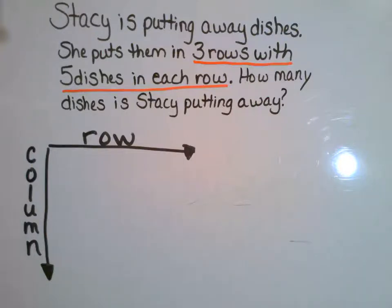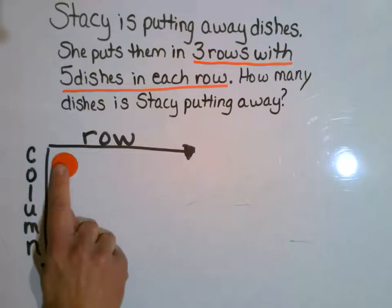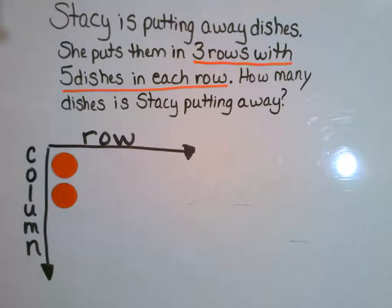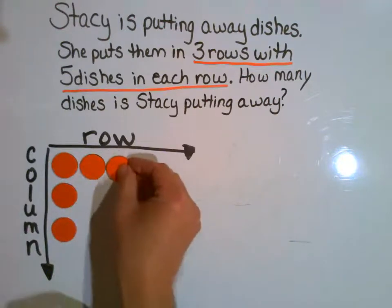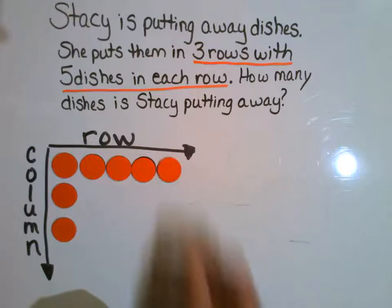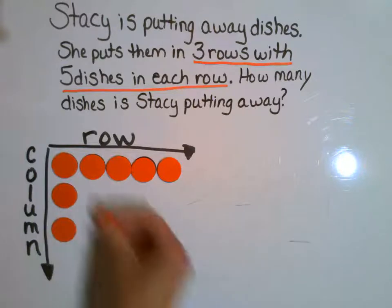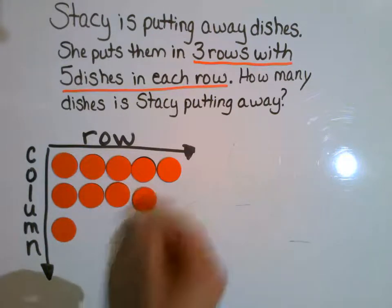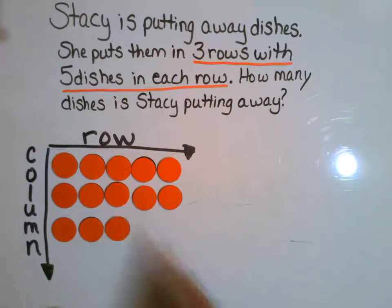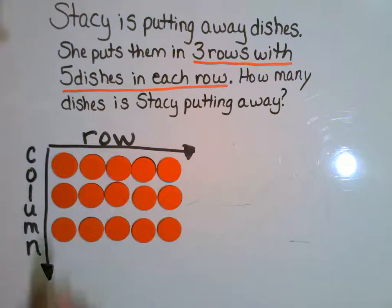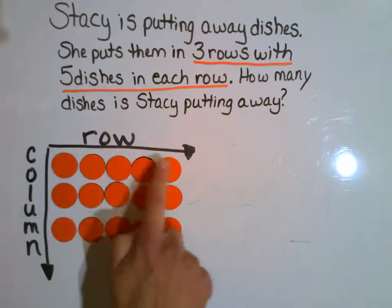So I'm going to build my rows. Here's the start of row one, here's the start of row two, and here's the start of row three. Now remember I need to make sure that I have five in each row. Row one: one, two, three, four, five. Row two: one, two, three, four, five. Row three: one, two, three, four, five. So now this is how she arranged those dishes — three rows with five dishes in each row.